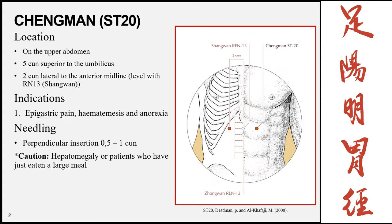Chengman, Stomach 20, is on the upper abdomen, 5 cun superior to the umbilicus and 2 cun lateral to the midline. Locate the umbilicus and suprasternal angle, divide in half for 4 cun, then go 1 cun superior to that. Find the 2 cun lateral mark using the clavicle method. Where these two lines meet is Stomach 20. This point is used for stomach problems such as epigastric pain, hematemesis, and anorexia.